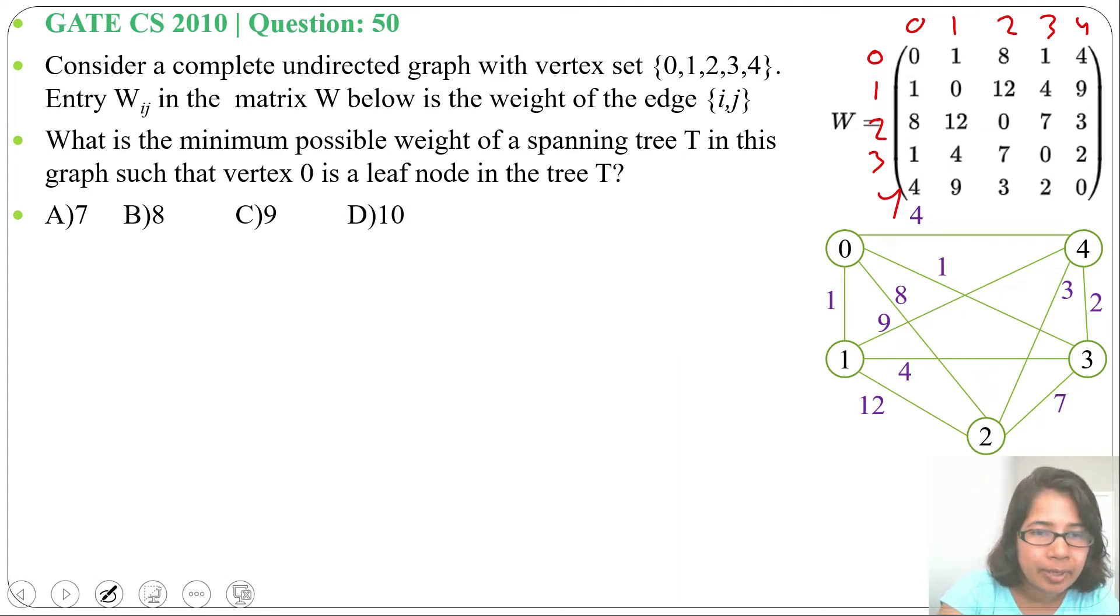Vertex 0 is a leaf node means vertex 0 degree will be 1. Only one edge is adjacent with vertex 0, then only degree will be 1 and it will be a leaf node. You can use any algorithm for finding minimum spanning tree. Let me use Prim's first, then I will use the Kruskal algorithm.